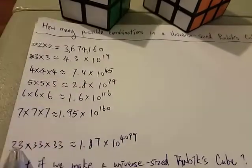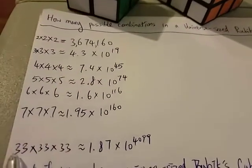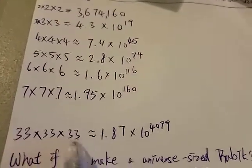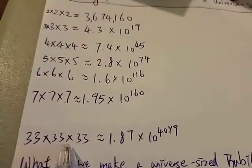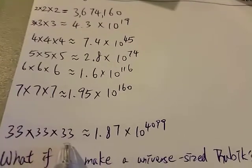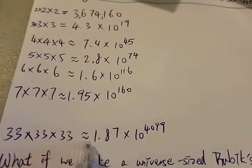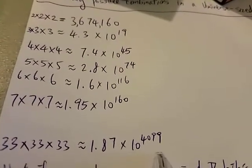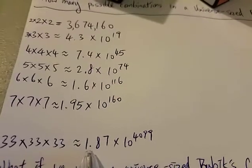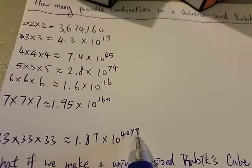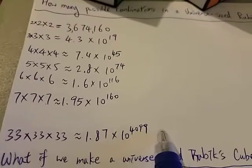As of 2018, the biggest Rubik's Cube ever made is a 33x33x33 Rubik's Cube. The total number of combinations is huge, around 1.87 times 10 to the 4,099 total combinations.